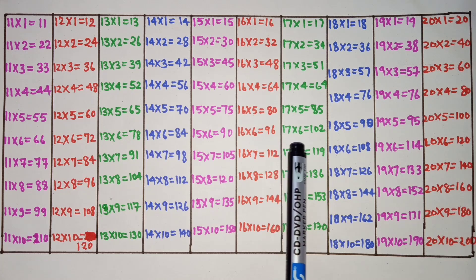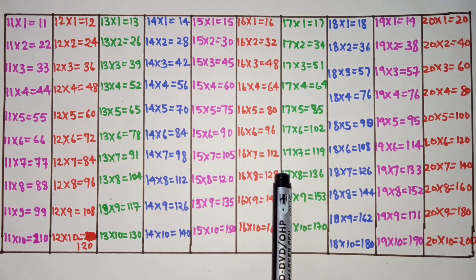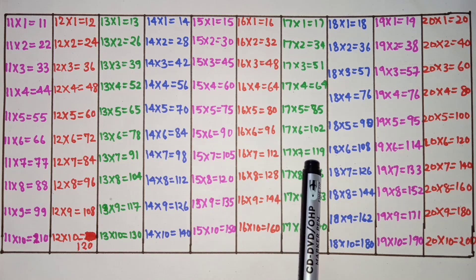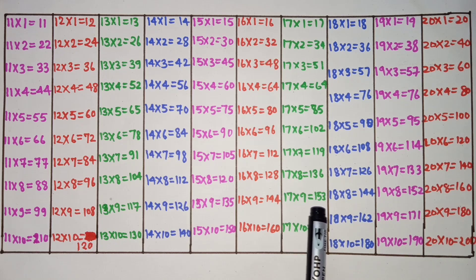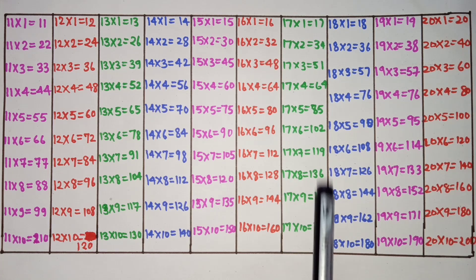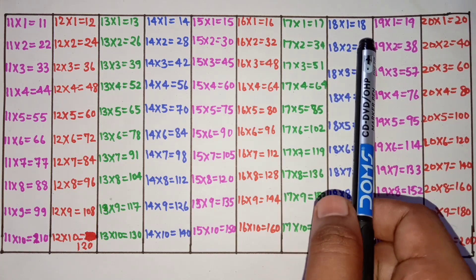17 sixes are 102, 17 sevens are 119, 17 eights are 136, 17 nines are 153, 17 tens are 170.